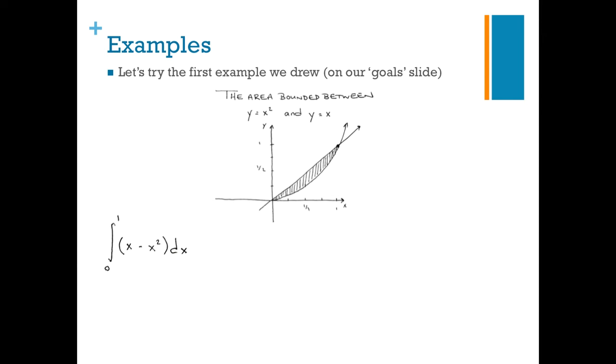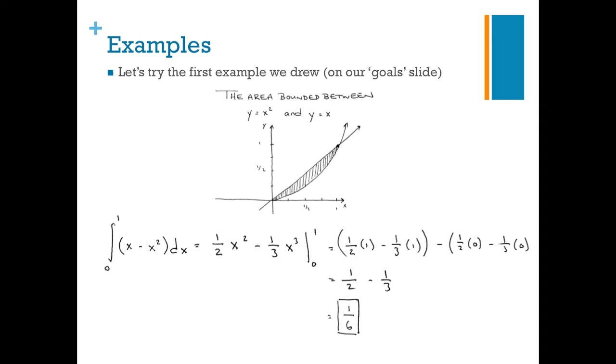Now it's an easy integral, but for the sake of practice, if you want to hit stop or pause for a minute, work it out for yourself, and then compare answers. You should get a half x squared minus a third x cubed for the antiderivatives. Plug in zero and one and subtract the way we always do, and we get a half minus a third, which is one over six.